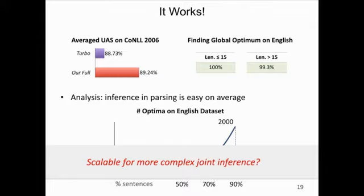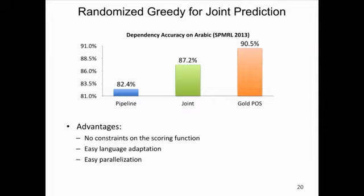Given the success on dependency parsing, a natural question is whether it is still scalable for a more complex inference problem like joint prediction. We extended this algorithm to the joint prediction task and found it also works well on this hard inference problem, significantly outperforming the pipeline model. Comparing to previous joint modeling methods, our method has no constraint on the scoring function, it's easy to apply to different languages like Chinese and Arabic without significant change, and it's easy to parallelize for higher speeds.